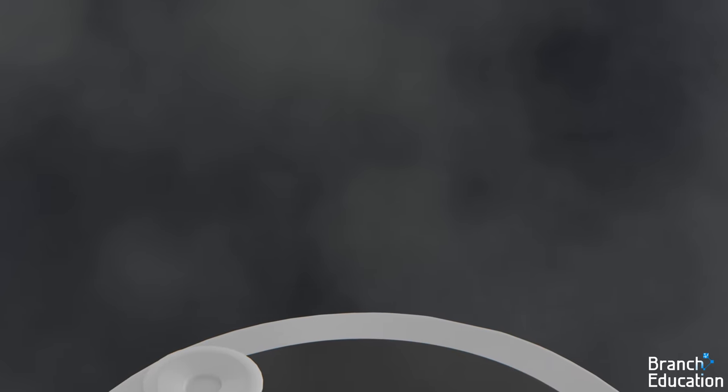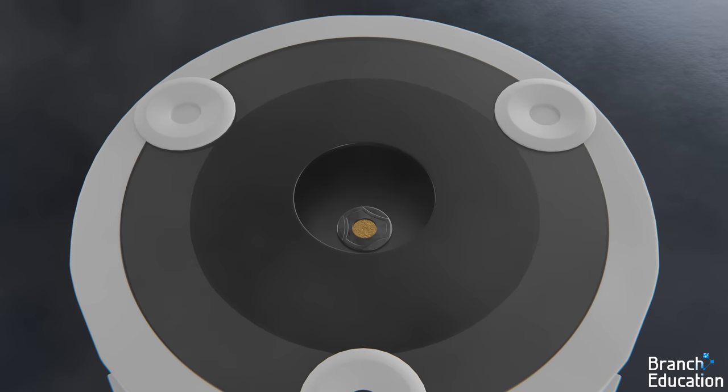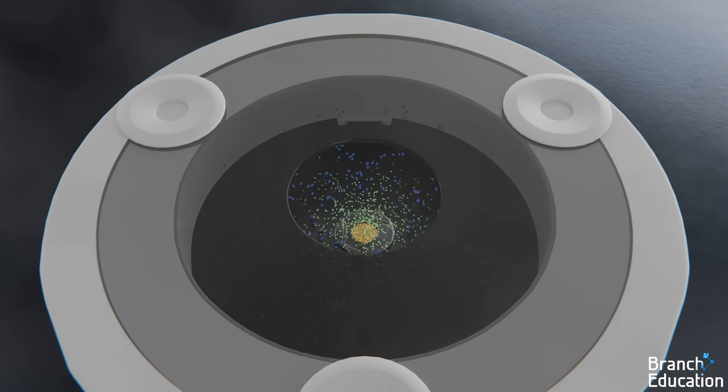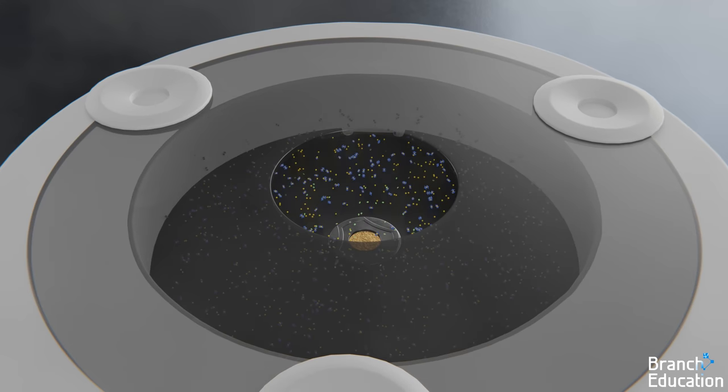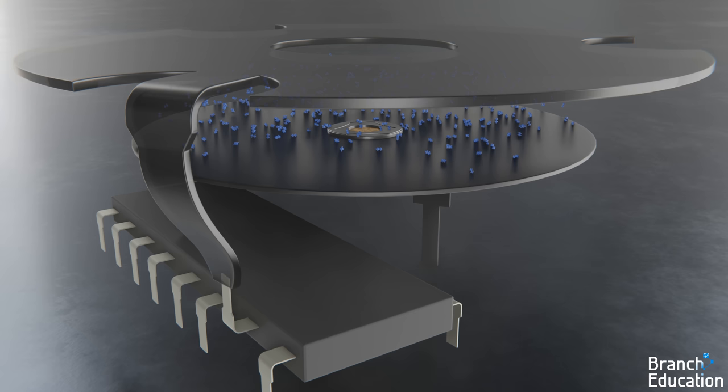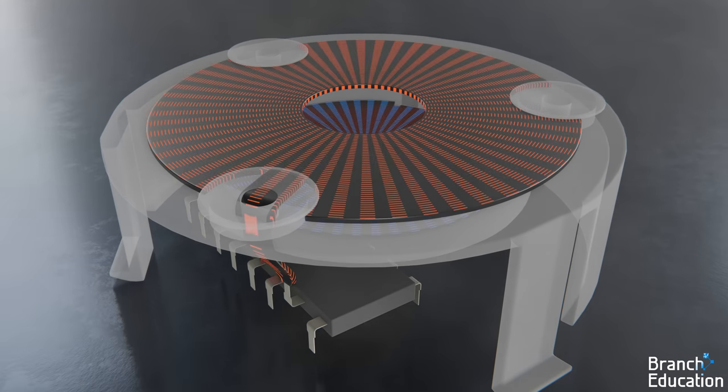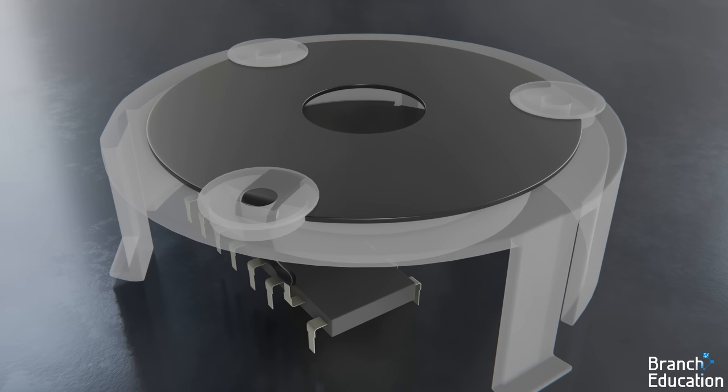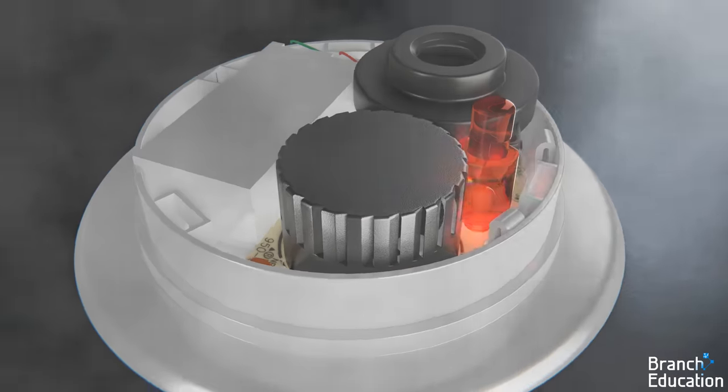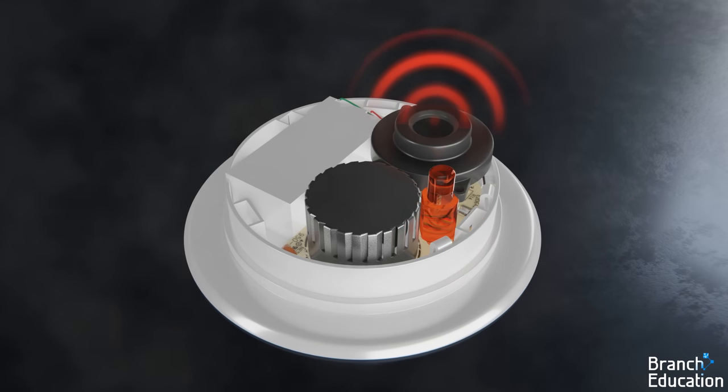Thus, when smoke from a fire, smoldering combustibles, or burnt popcorn is present in the ionization chamber, it intercepts both the alpha particles as well as the ionized air molecules and electrons, thus preventing the electrons from reaching the top plate and positive ions from reaching the bottom plate. No electrons flowing to the top plate means no current is present, and this lack of current is measured by the microchip down here, which in turn triggers the piezoelectric alarm to alert you that there's a fire or that you're bad at cooking.